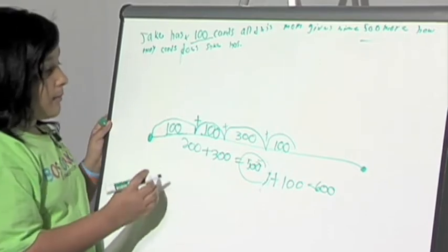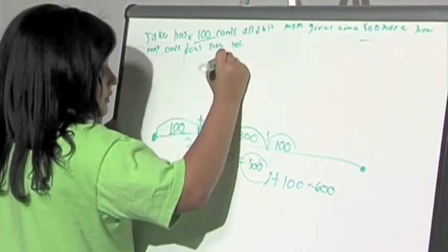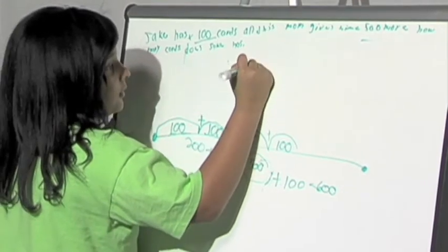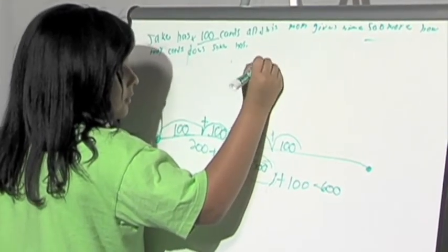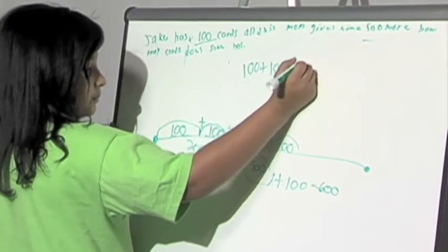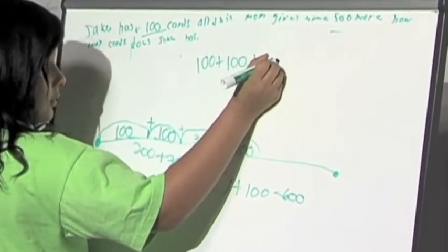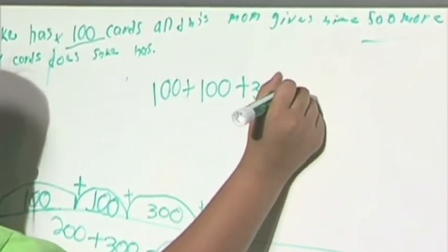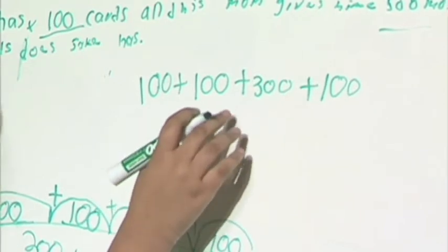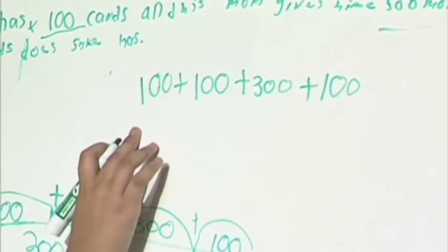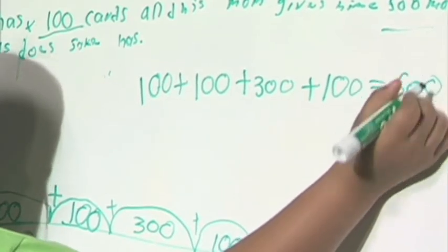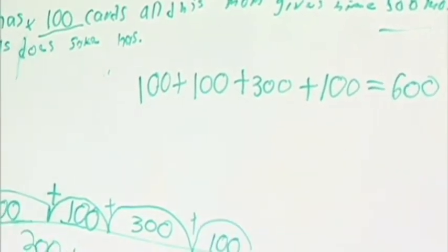So, now, what I'm going to do is the equation that I did. 100 plus 100 plus 100 plus 100 equals 600.